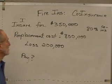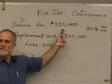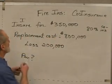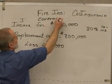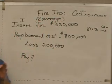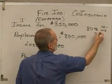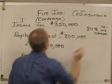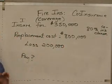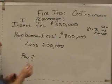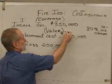Here's a sample co-insurance problem. Let's say I insure a building for $350,000 — in other words, I bought $350,000 worth of coverage on that building. Let's say there's an 80% co-insurance clause, and the replacement cost of my building is $800,000. Another way of saying that would be the value of my building is $800,000.